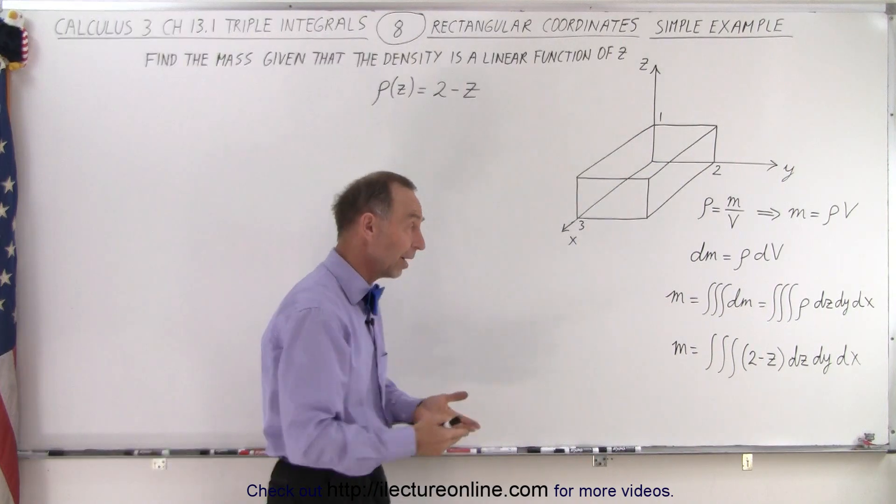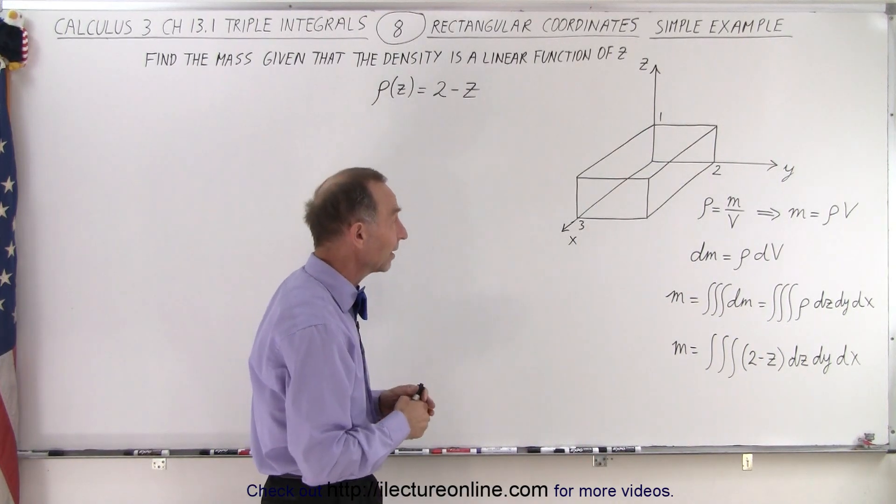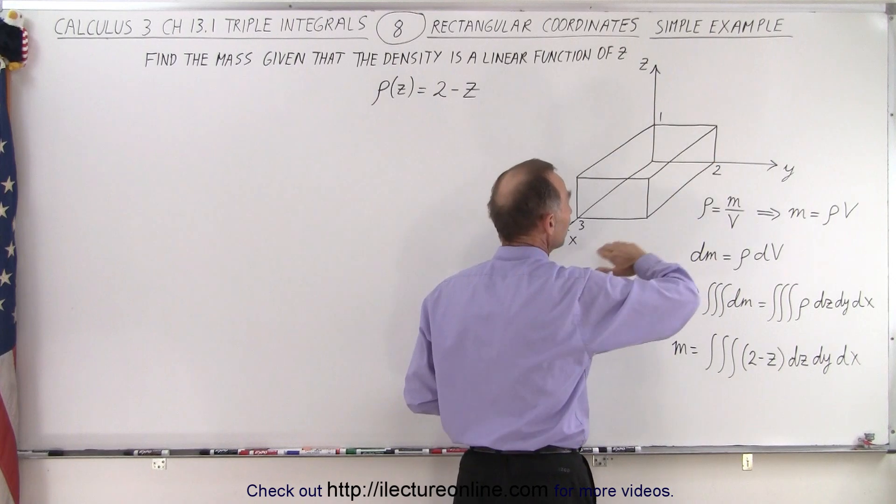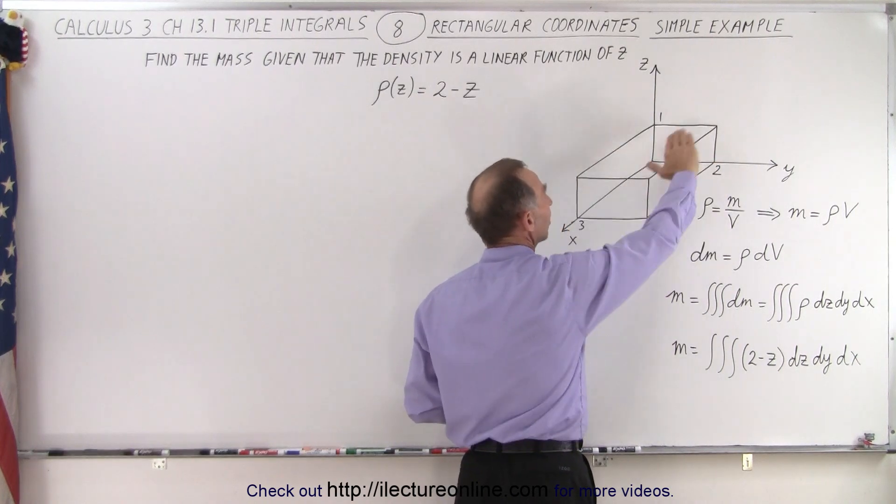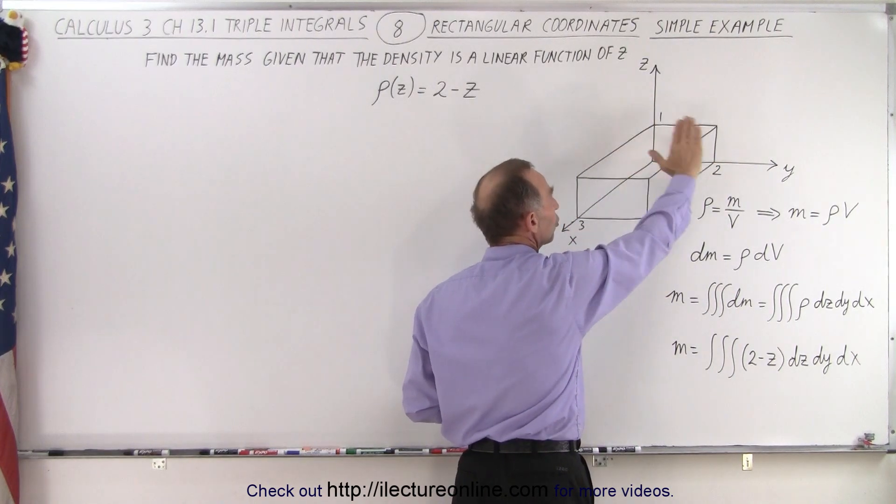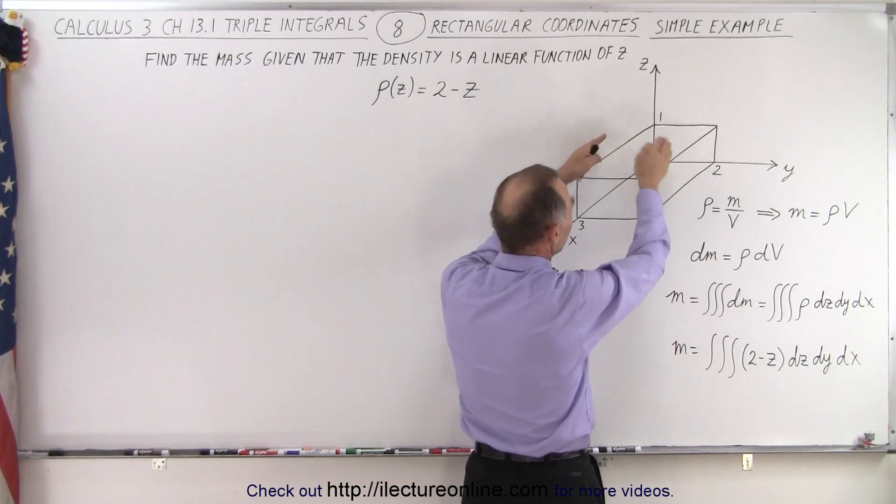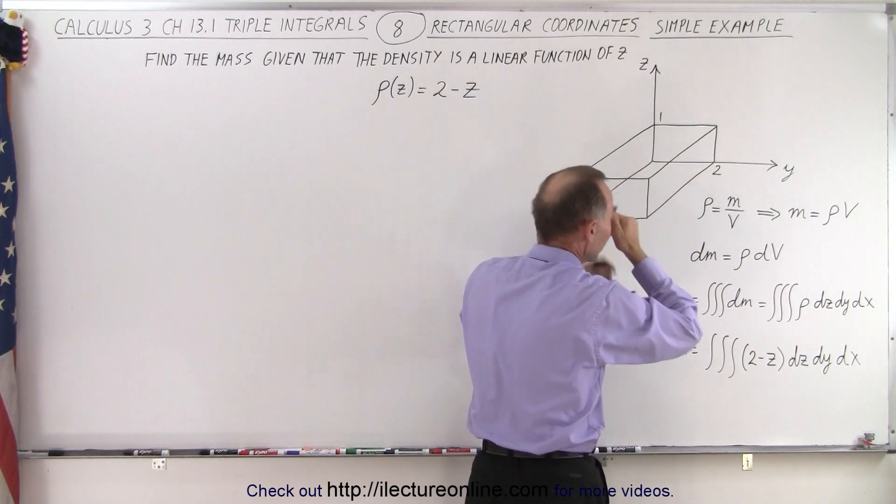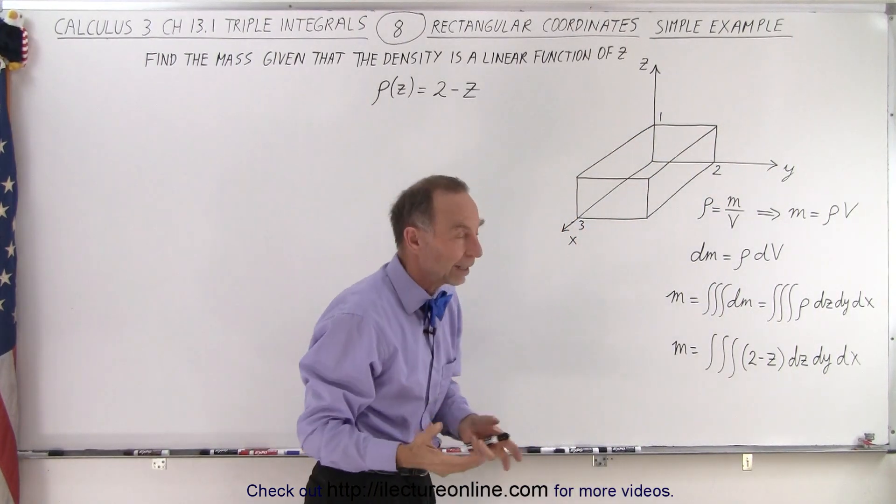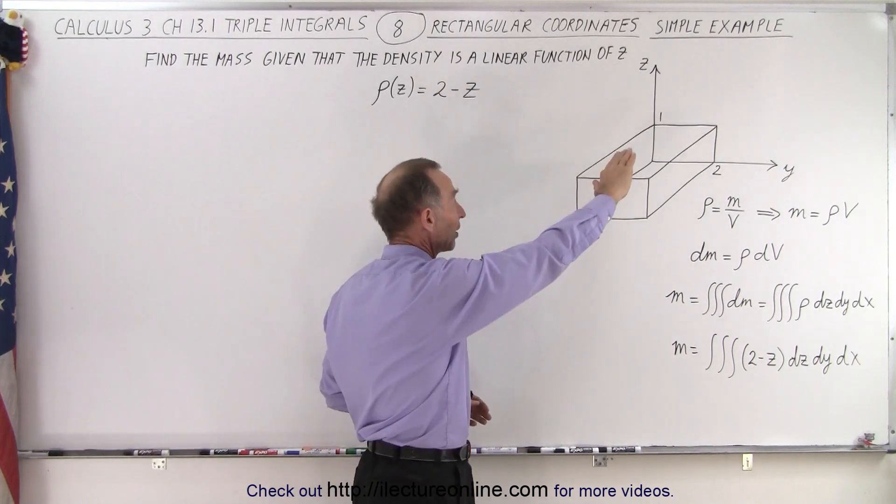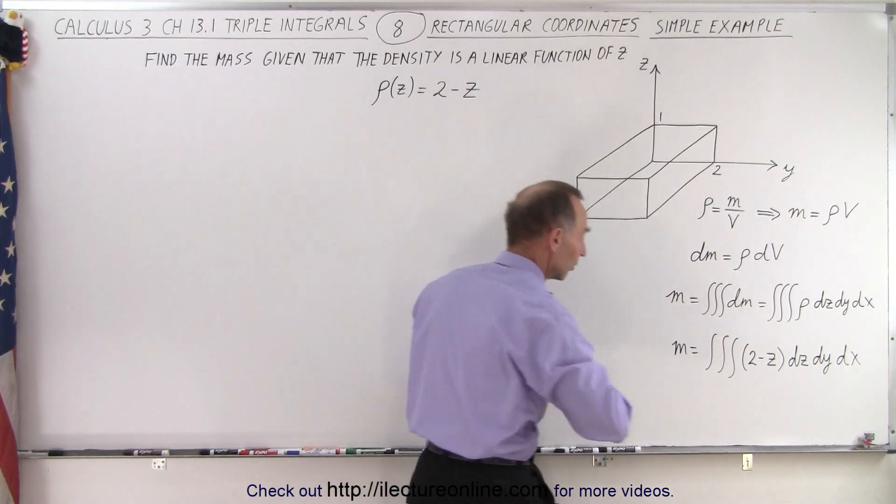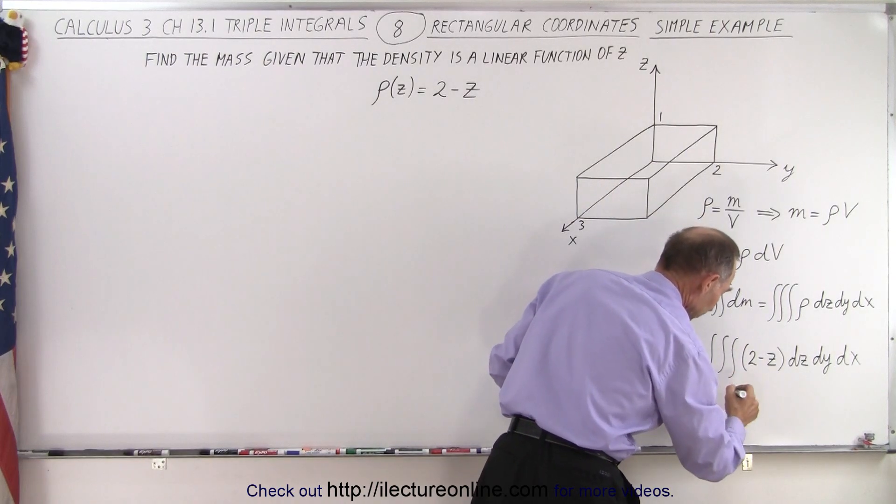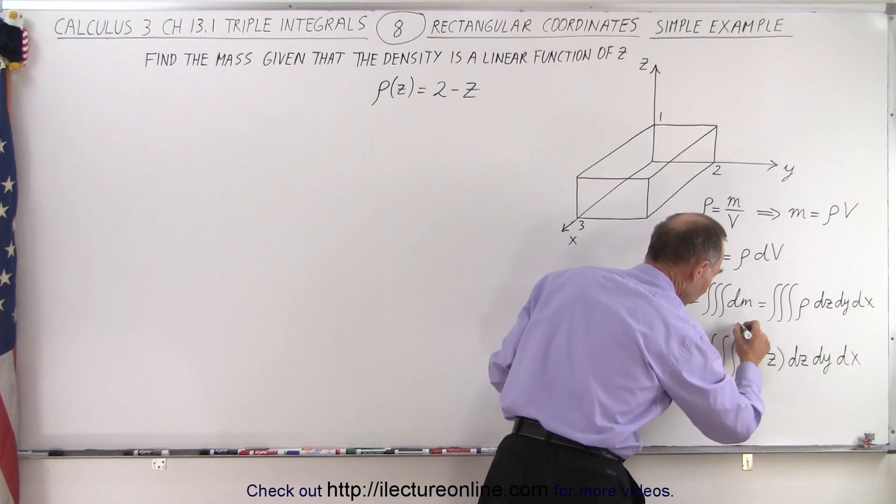Now, what are going to be the limits? In this case, it's fairly easy. Notice that the lowest that z can be is 0, and the highest it can be is 1. And notice that there's no change in the upper. It's not like it's bulging up or a semi-sphere or semi-cylindrical shape or anything like that. It's simply the highest value is 1 and the lowest value is z. The limits of integration are going to go from 0 to 1.